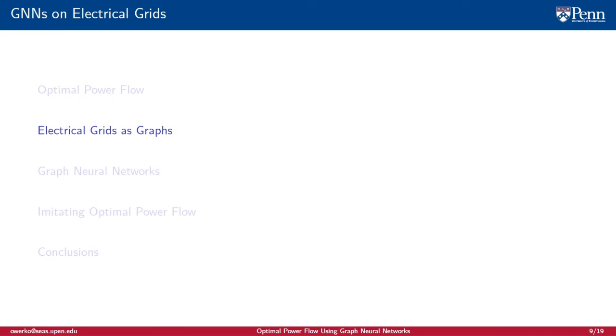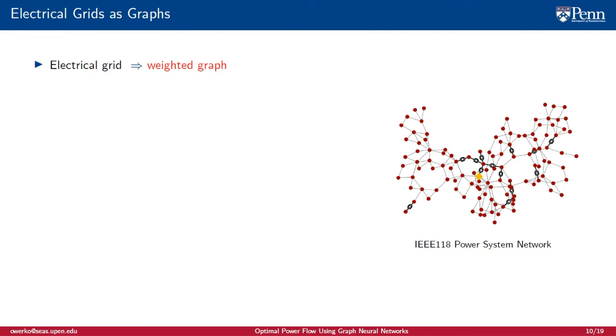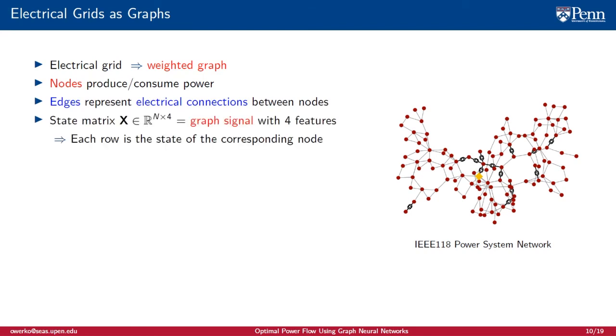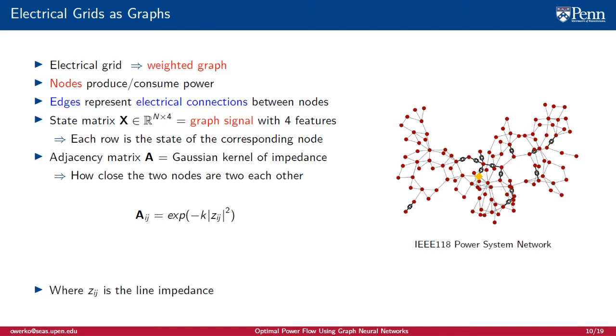Next, I will explain how an electrical grid can be represented by a graph, specifically a weighted-directed graph. Nodes on our graph will correspond to nodes on the grid. Edges will represent the electrical connections between nodes. The state matrix becomes a graph signal with four features. We construct our adjacency matrix from the Gaussian kernel of impedance. The lower the impedance between the nodes, the closer they are. Additionally, to ensure our matrix is sparse, we apply a threshold, below which the weights will be zero.